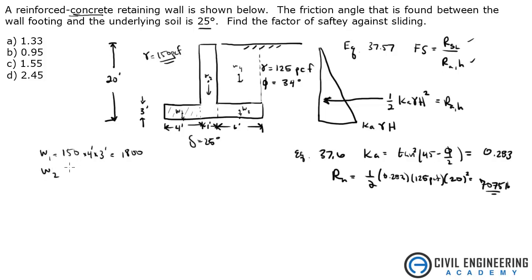W2 is taking the next one, which is 150 times 1 times 20 feet, 20 feet, bottom to top. We're not subtracting that little 3 feet chunk. That's 3,000. Weight 3 is going to be a 6 foot by 3 foot by 150 PCF. That's 2,700.